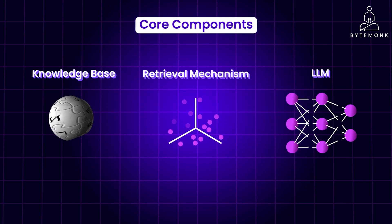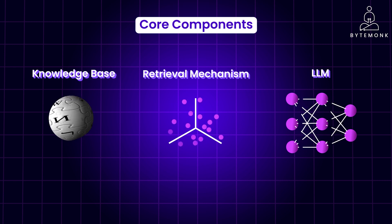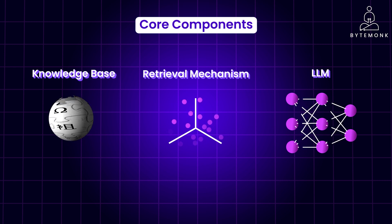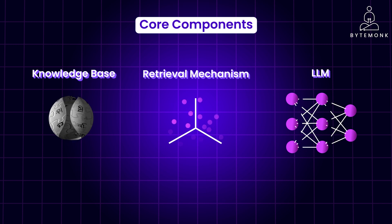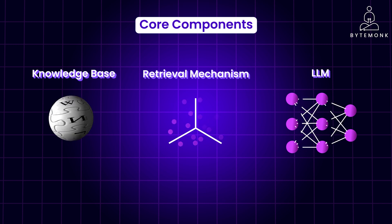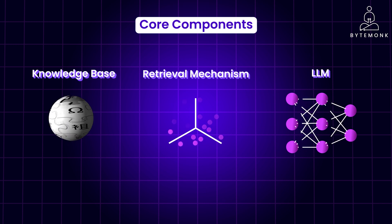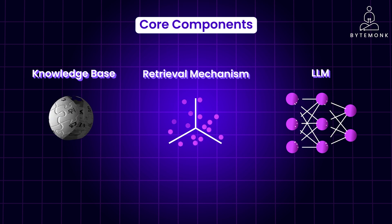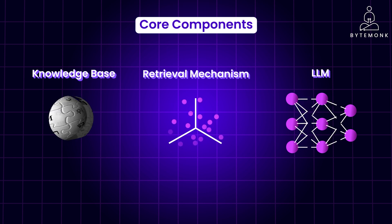The knowledge base is your source of information, such as documents, databases, etc. The retrieval mechanism is about how you find relevant information, such as vector search, keyword search, etc. And the LLM is the brains of the operation, such as GPT-4.